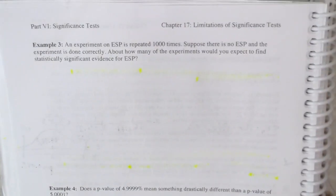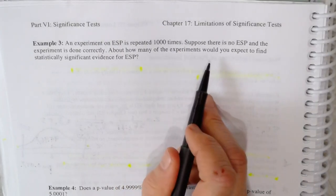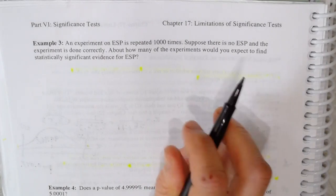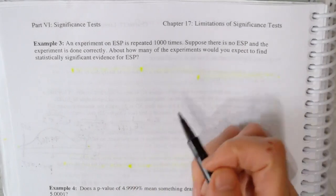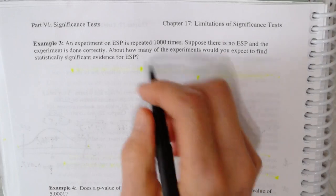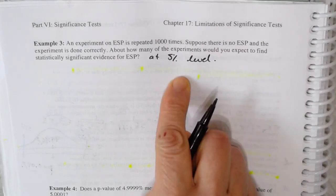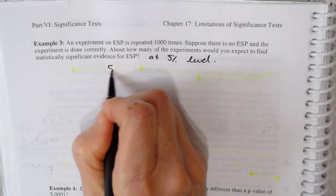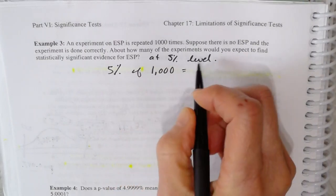And here's another example. Suppose you did an experiment on ESP and it's repeated a thousand times. Even if there's no ESP and the experiment's done correctly, how many experiments would you expect to find statistically significant evidence for ESP at the 5% level? Well, by definition, you'd expect 5% of the 1,000, which is equal to 50.